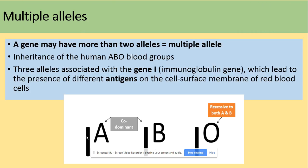Moving on to multiple alleles. A gene has many forms, but some genes can have more than two alleles — and we call those multiple alleles. The example of this is the inheritance of human blood groups: A, B, and O. Those alleles are associated with gene I — the immunoglobulin gene — which leads to the presence of different antigens on the cell surface membrane of red blood cells.